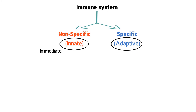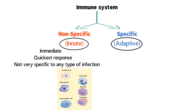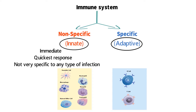The innate immune system is the immediate and quickest response to an infection. However, it is not very specific to any type of infection. Since the innate immune response is not very specific, it often is not enough of a response to contain the infection. This is the reason for the adaptive immune response. The remainder of this video will cover the adaptive immune response. For more information on the innate immune response, see the video on inflammation on this channel.